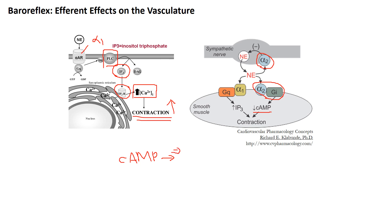The mechanism is that cyclic AMP inhibits another kinase called myosin light chain kinase. So the mechanism of the alpha-2 receptors is that alpha-2 stimulation reduces cyclic AMP, which reduces the inhibition of myosin light chain kinase, leading to greater contraction.